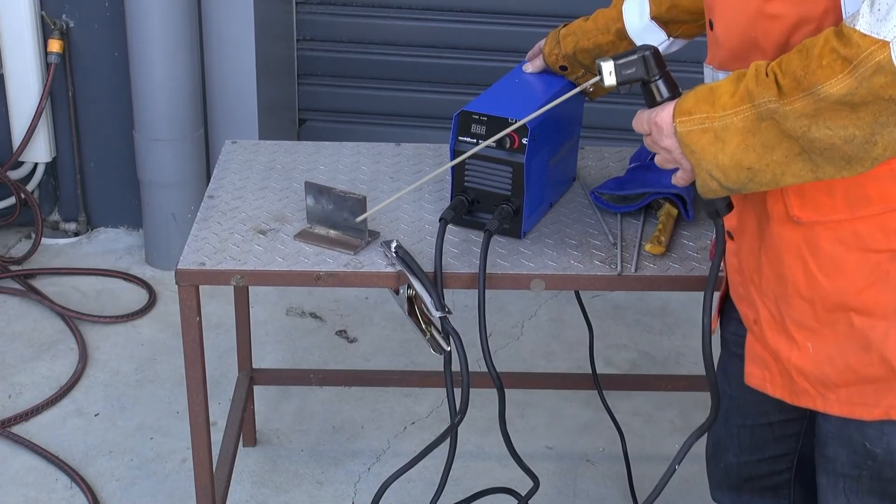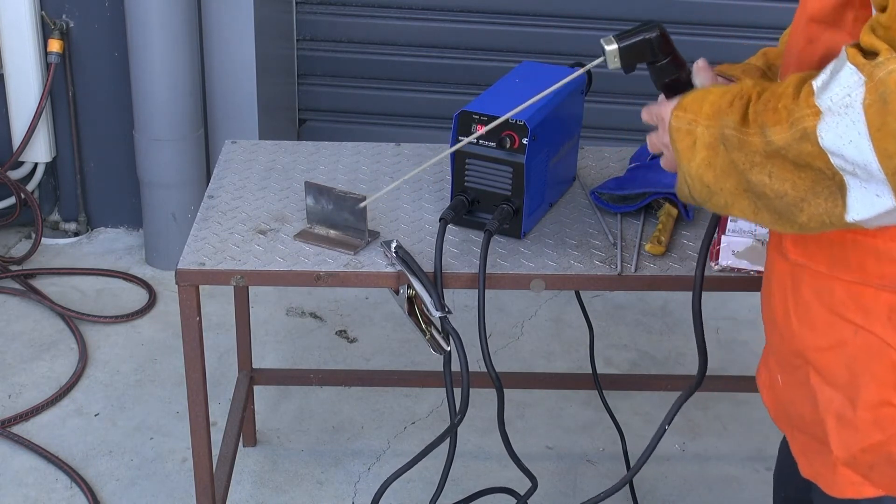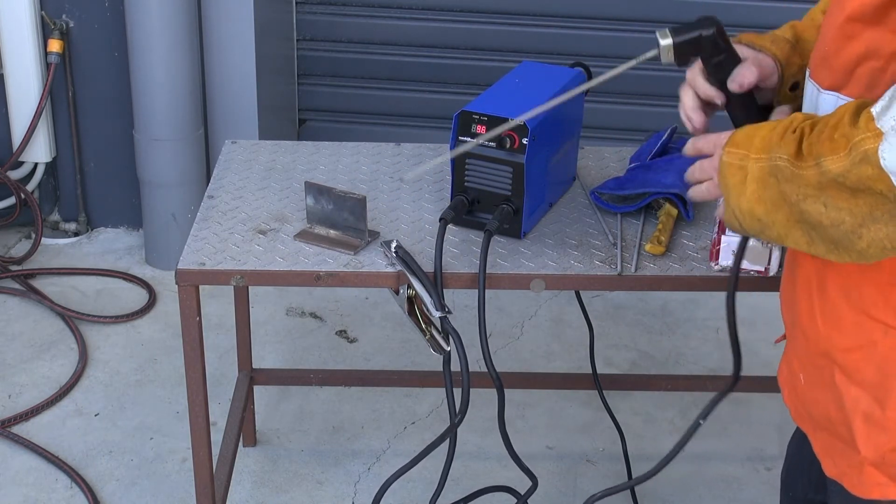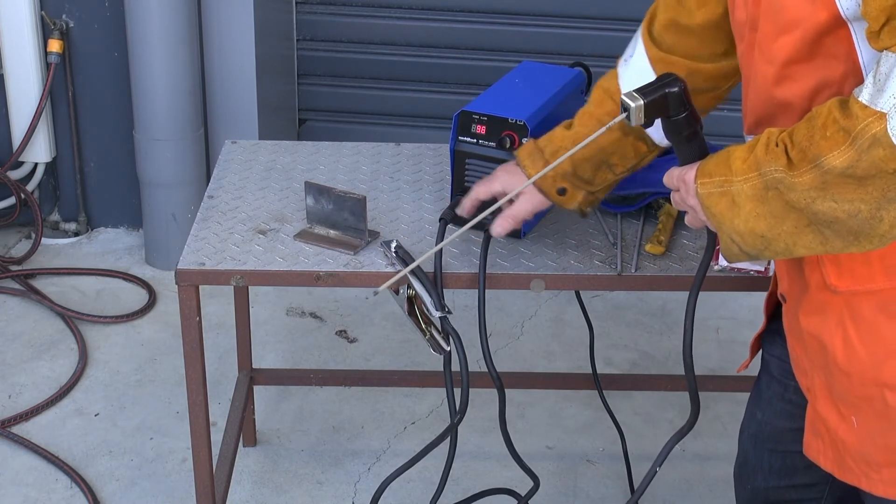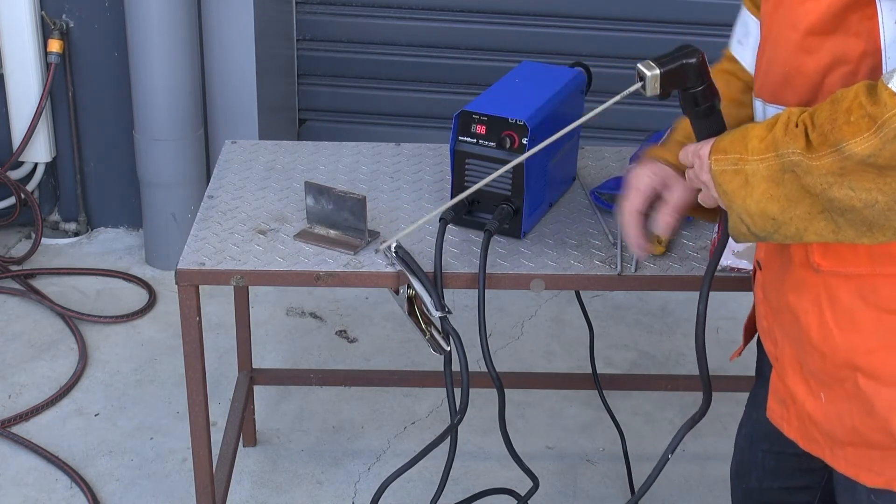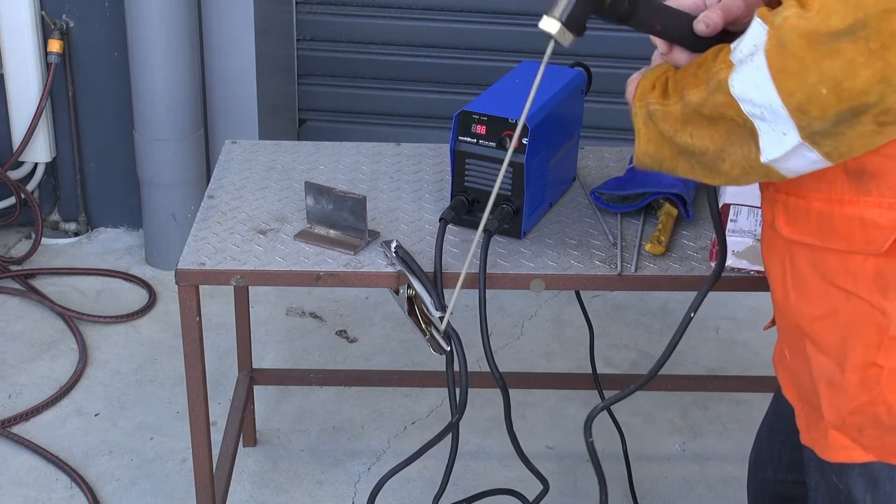Now we're outside. I'm going to run the little WeldTech 141 arc welder. I've made sure that I've got the polarity in the right way around, which means my electrode is in the positive side. I've made sure I've got a good earth. And now I'm ready to weld.